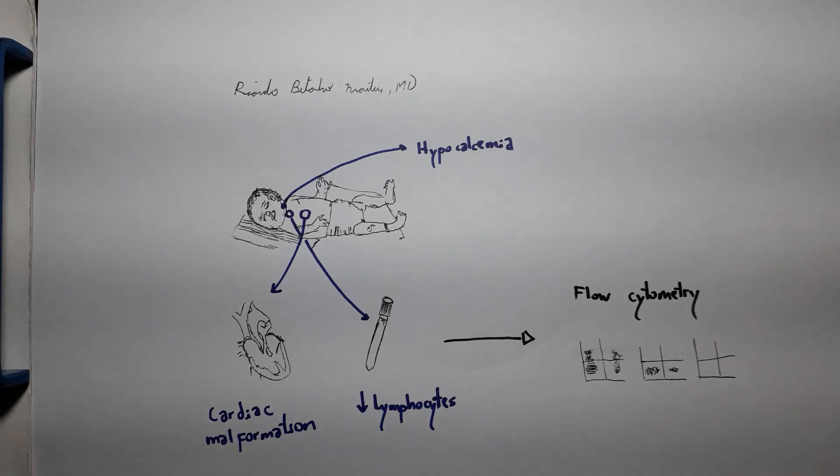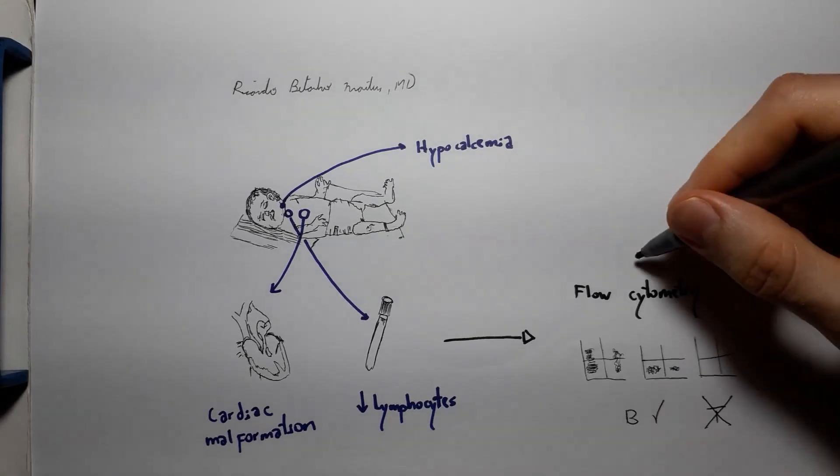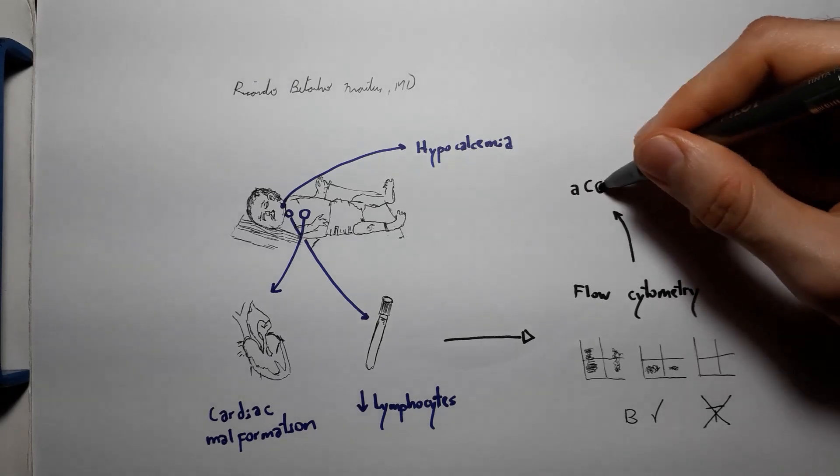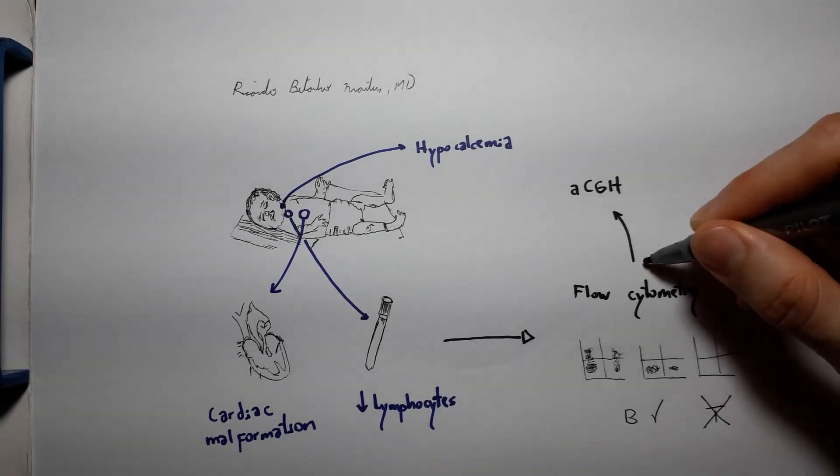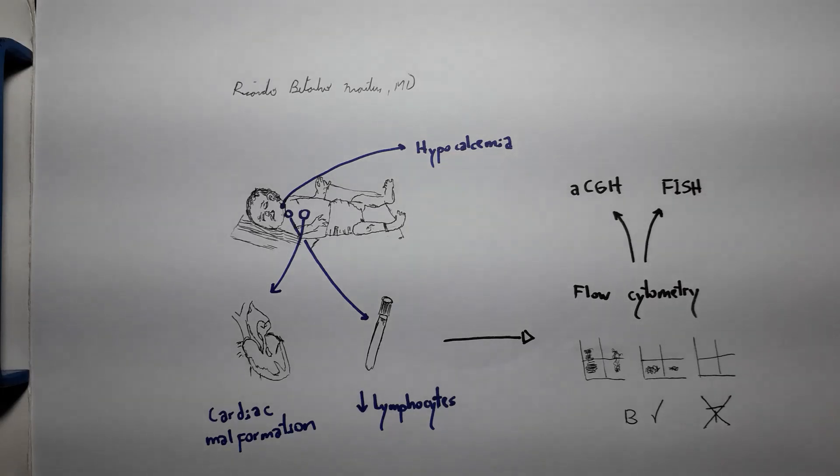We will then confirm the diagnosis through genetic studies. The two most common of these are the array comparative genomic hybridization (ACGH), which is the most appropriate test nowadays, and the fluorescent in situ hybridization (FISH), which is more readily available and less expensive but may miss smaller deletions that the ACGH would detect.